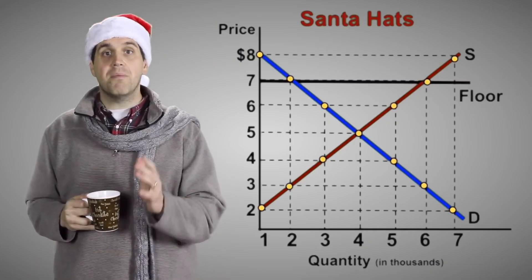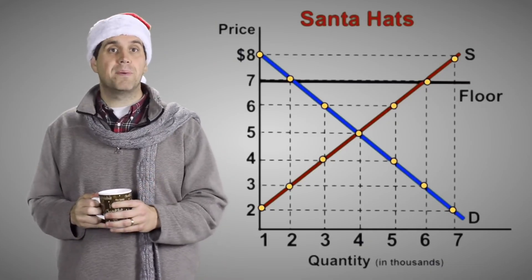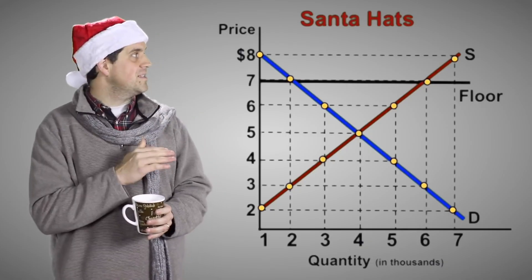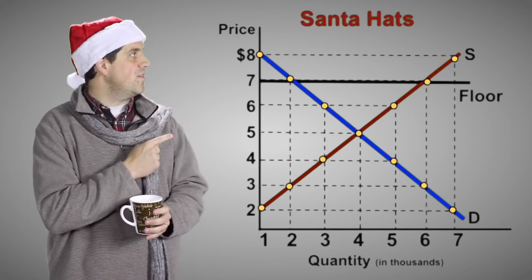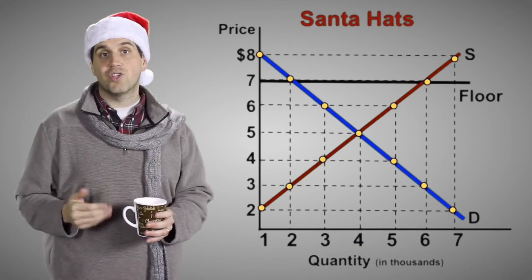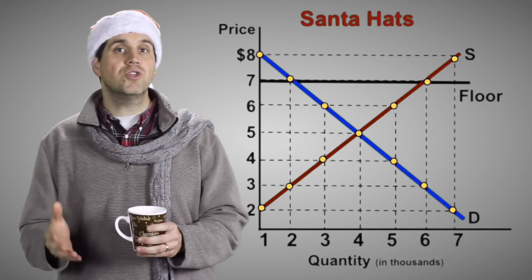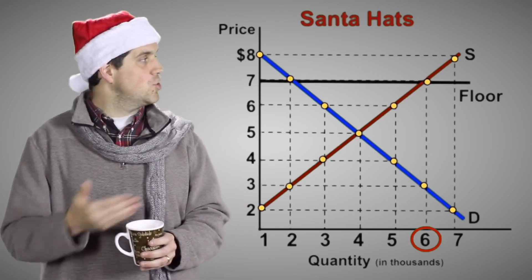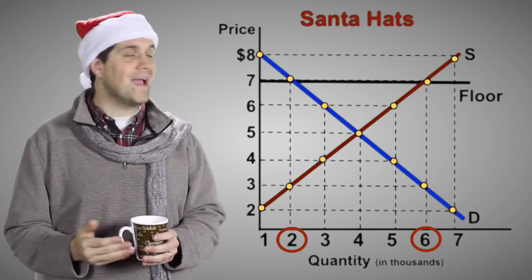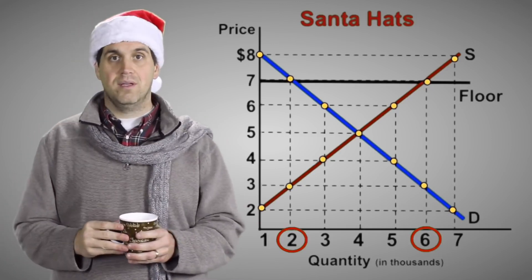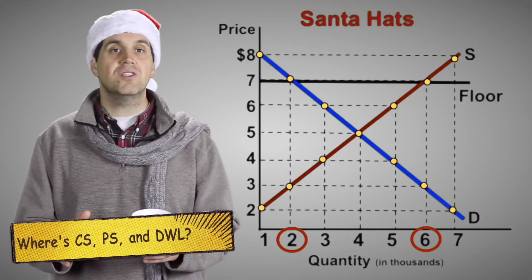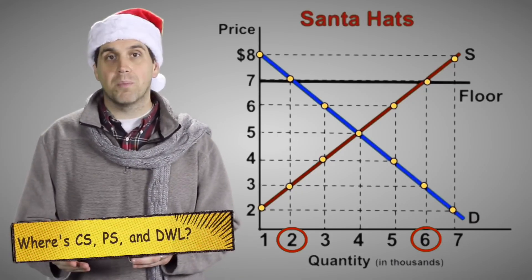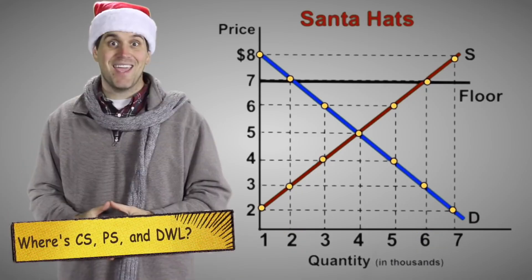Let's do it again, except this time let's see what happens with a price floor. The government says the price can't go lower than $7, and the result is a surplus. Producers want to make 6,000 units, but consumers are only willing to buy 2,000 units. Where's consumer surplus, producer surplus, and dead weight loss?